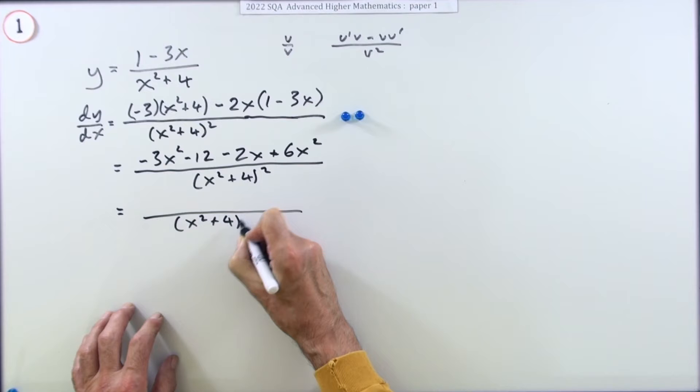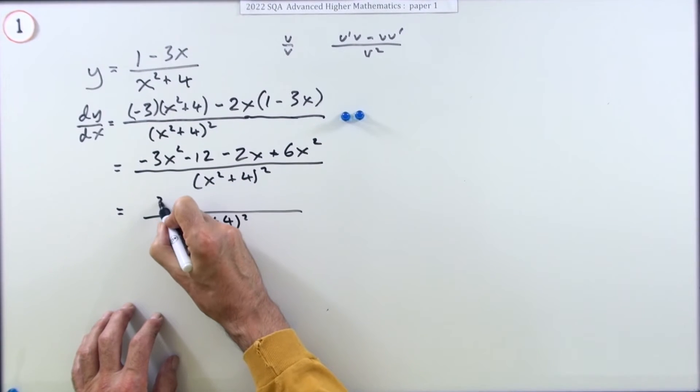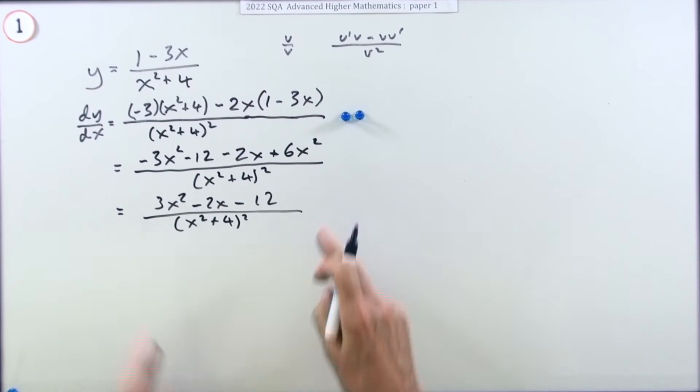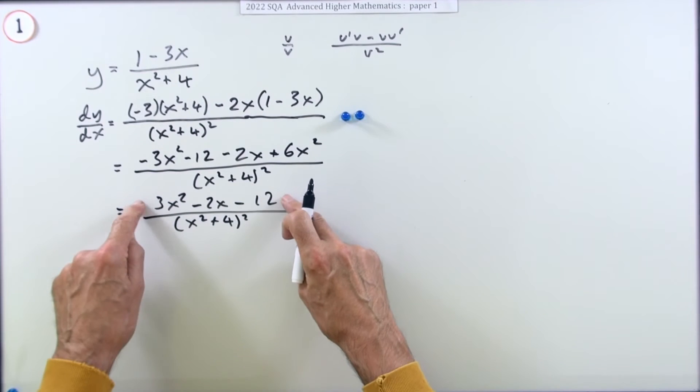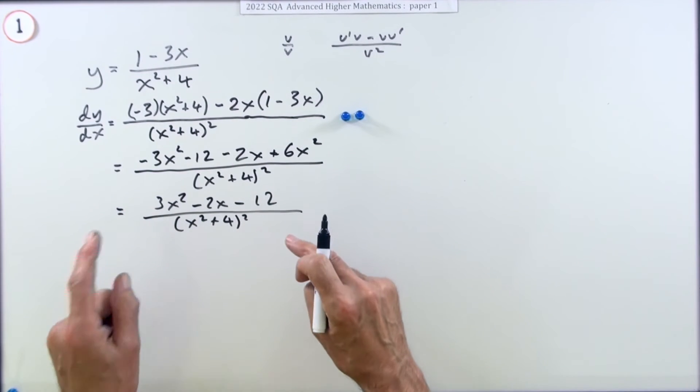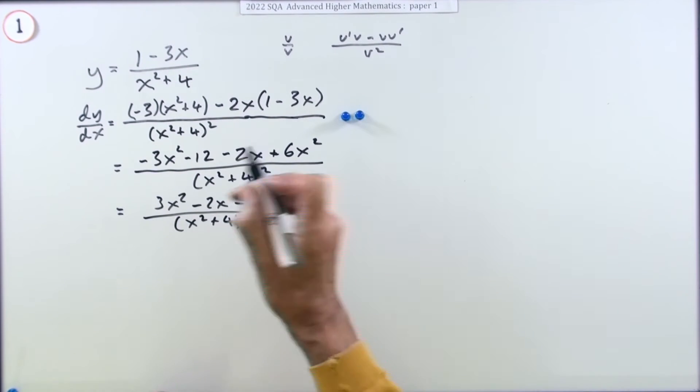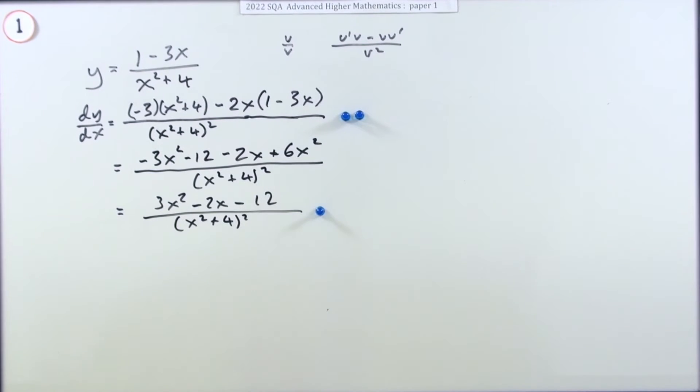So the final mark is for tidying it all up. So I've got x squared plus 4 all squared, then 3x squared minus 2x minus 12. Unless the top factorizes, which would be required if it gave a common factor. You can check quickly by doing the discriminant, b squared minus 4ac, so you've got 4 plus 144, that's 148, that's not a perfect square, so that's it done.